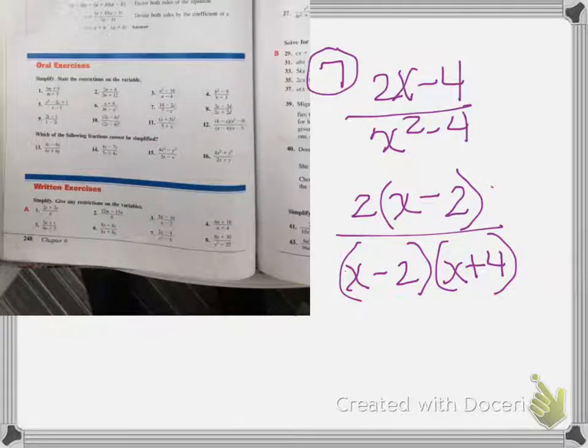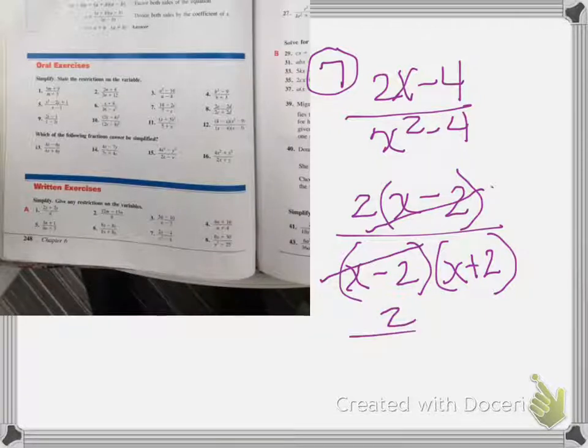Now I can start reducing. On the numerator I have x minus 2. On the denominator I also have x minus 2, which divides out to give you 1. So I have 2 over x plus 2.